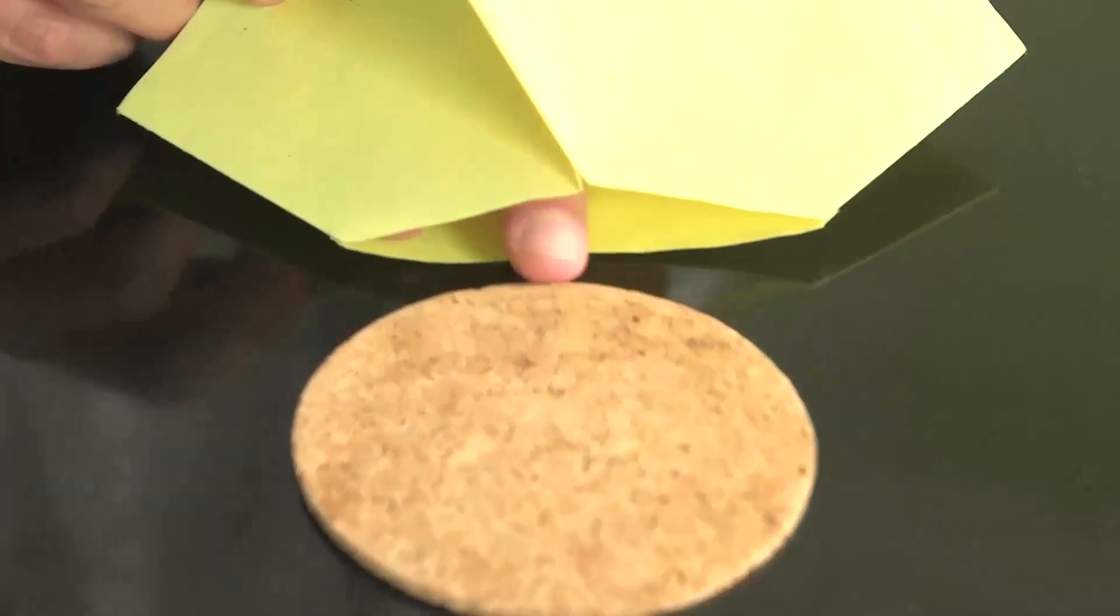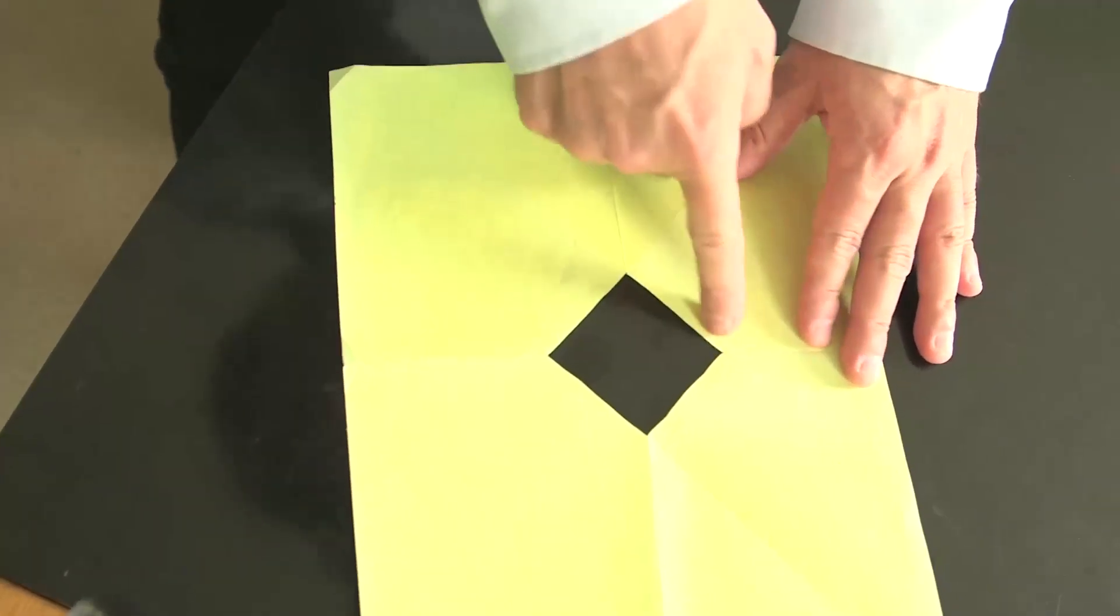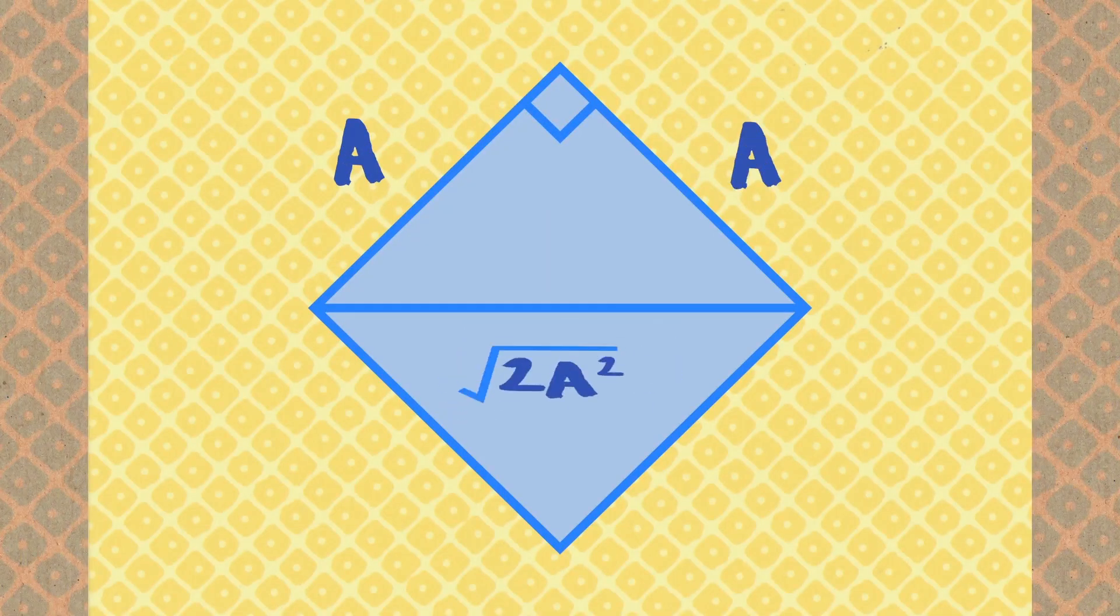Because this gap used to be not the diagonal, but the sum of those two sides. And if you remember Pythagoras, you have gained an extra factor of square root of two.